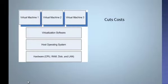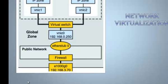Network virtualization cuts costs and is the future of the internet. It is a method of combining the available resources in a network by splitting up the available bandwidth into channels, each of which is independent from the others and can be assigned to a particular server or device in real-time. Here is an image of network virtualization — two different servers all connected to one virtual switch on one public network.